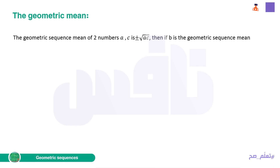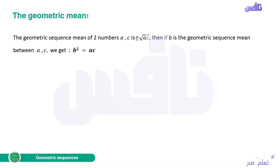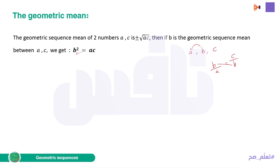The geometric mean of two numbers a and c is ±√(ac). If b is the geometric mean between a and c, then b^2 = ac. This comes from the property that in a geometric sequence a, b, c, the ratio b/a = c/b, so by cross-multiplication b^2 = ac.